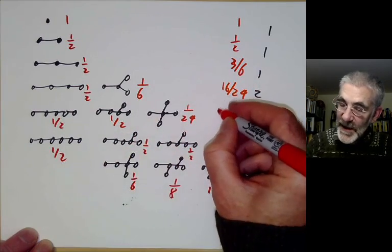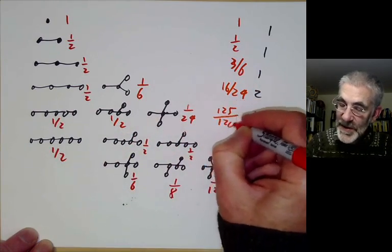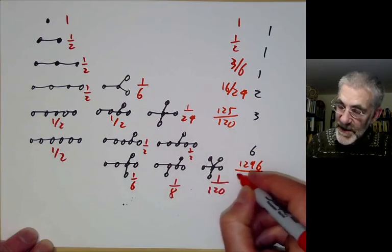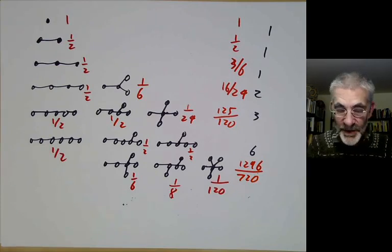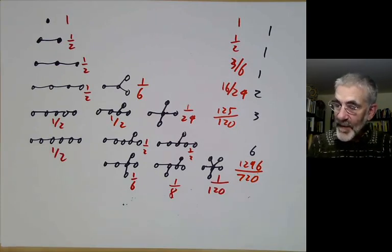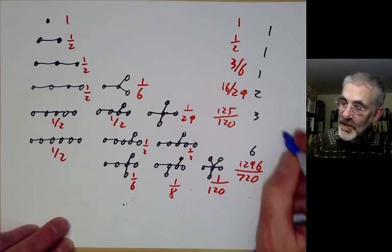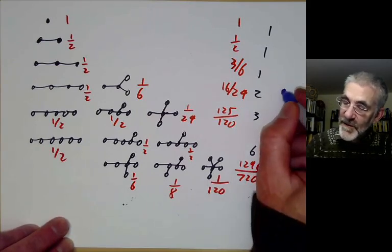For five points, we get 125 over 120. For six points, we get 1296 over 720. That's the number of weighted trees. Now if you notice, these numbers are rather obvious. This is 6 to the 4, 5 cubed, 4 squared,